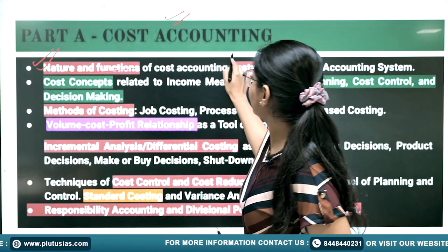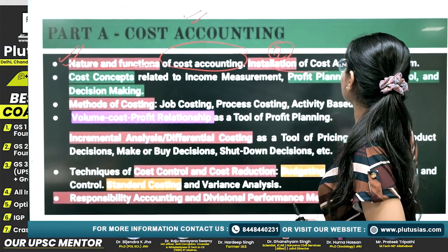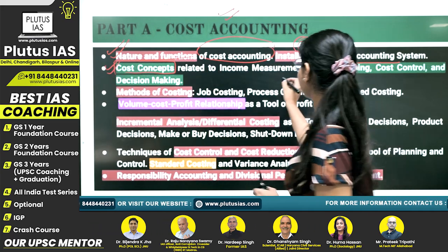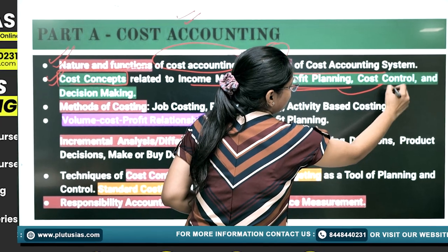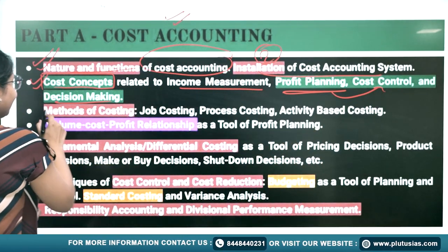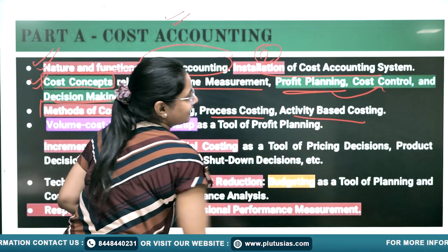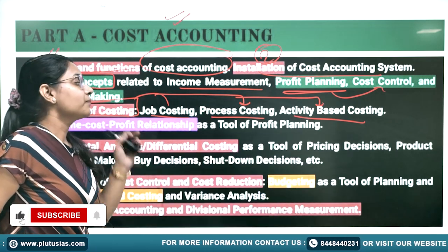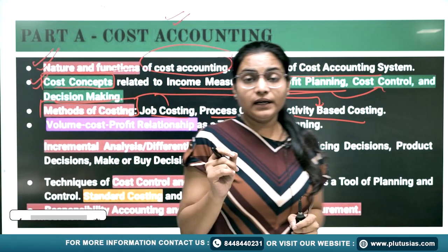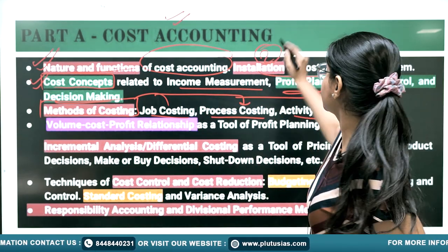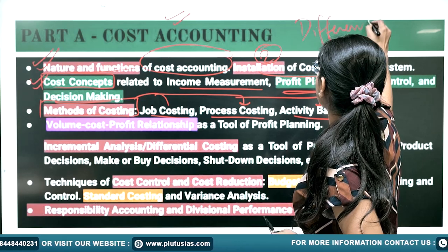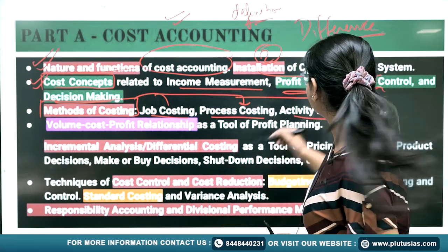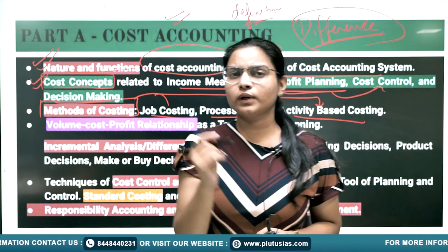In Cost Accounting, the syllabus clearly characterizes the nature and function of Cost Accounting, and the second part is installation of a Cost Accounting system. The main chapters start from Cost Concepts — clearly defined as income measurement, profit planning, cost control, and decision making. Then Methods of Costing: Job Costing, Process Costing, and ABC — consider them as separate chapters. Prepare one-pager notes for each, and note that UPSC tends to ask the difference between topics placed together in the syllabus.